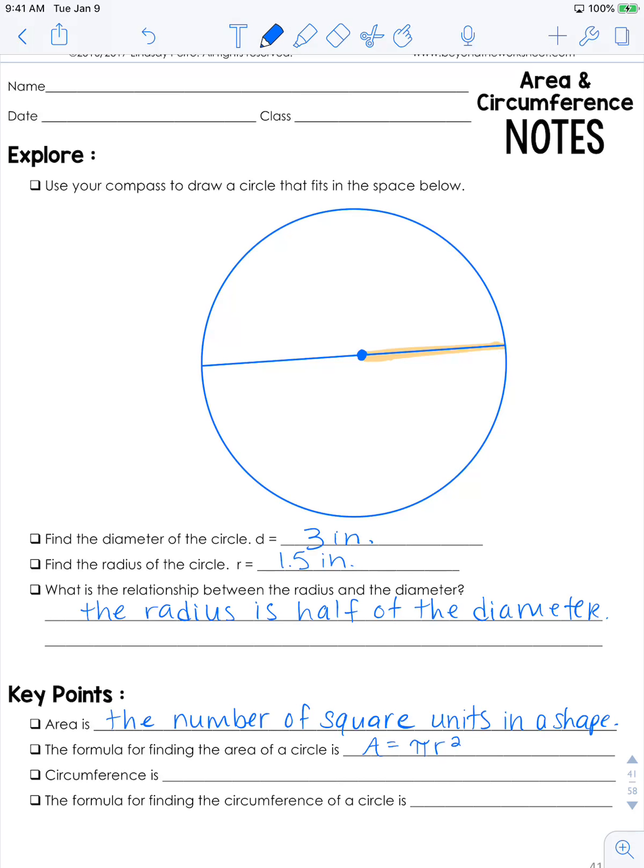Circumference is the circle word for perimeter. It is the distance around a circle. And it starts with CIRC just like circle does.